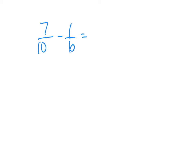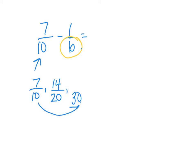Method number one: we have seven tenths, that's the larger fraction. We're going to find multiples of ten and find the multiple they have in common. We list them — seven tenths. Going to twentieths, multiply by two: fourteen. Six doesn't go into twenty evenly, so let's go to thirty. Ten times three equals thirty, so multiply seven times three: twenty-one. Six goes into thirty, so we stop there.